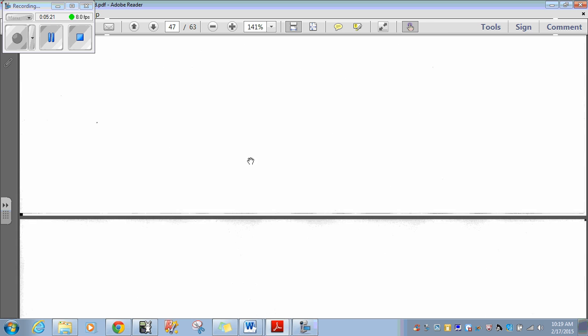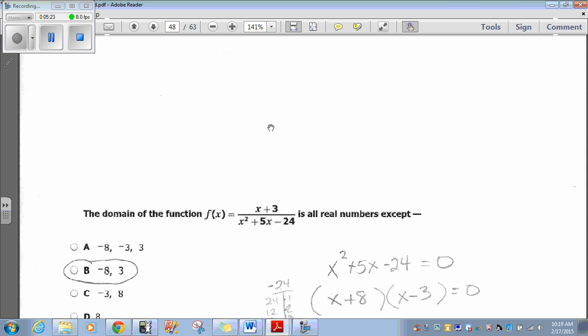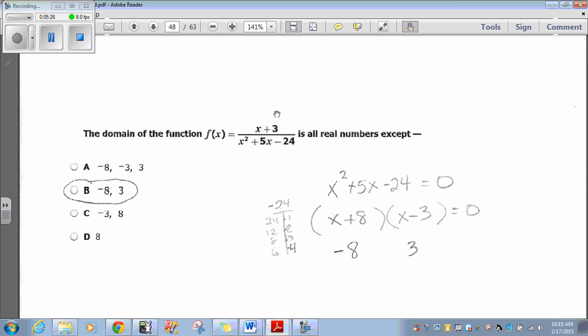Question 44. The domain of the function x plus 3 over x squared plus 5x minus 24 is all real numbers except. Now the domain is all real numbers except where it makes the denominator equal 0. So we need to find the two numbers that would make the denominator 0. x squared plus 5x minus 24.